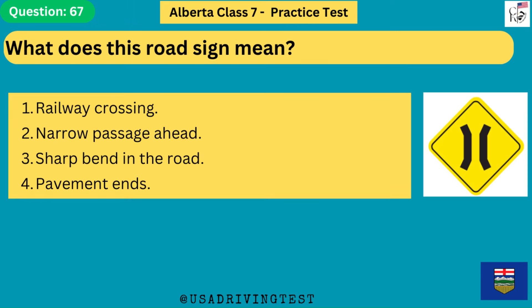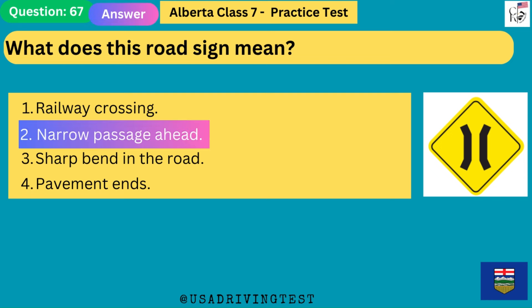What does this road sign mean? 1. Railway crossing. 2. Narrow passage ahead. 3. Sharp bend in the road. 4. Pavement ends. The answer is 2: narrow passage ahead.